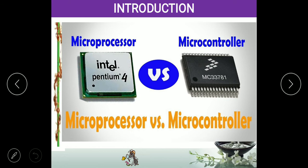Examples of microcontrollers include washing machines, air conditioners, and refrigerators. The speed of the microprocessor is higher, while the speed of the microcontroller is lower. So like that we can differentiate the two.